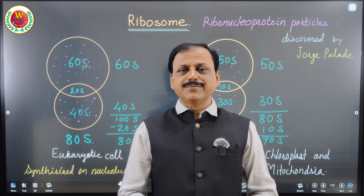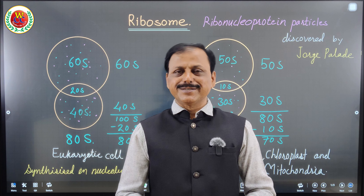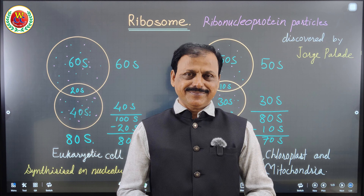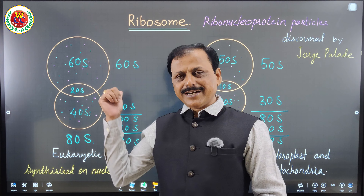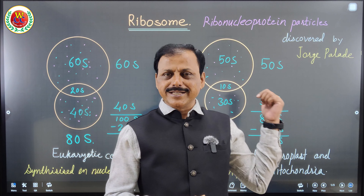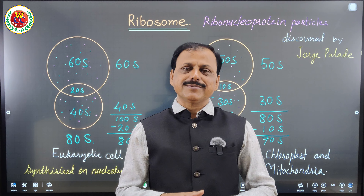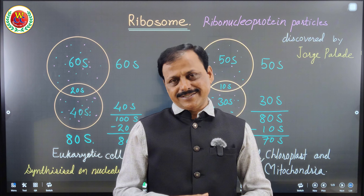Right from ninth class you learn ribosomes as very important organelles present in the cell cytoplasm, as well as in chloroplast, mitochondria, and in prokaryotic cells. There are two types of ribosomes: the 80S type and the 70S type, for which I have drawn two diagrams to make it very easy to understand.